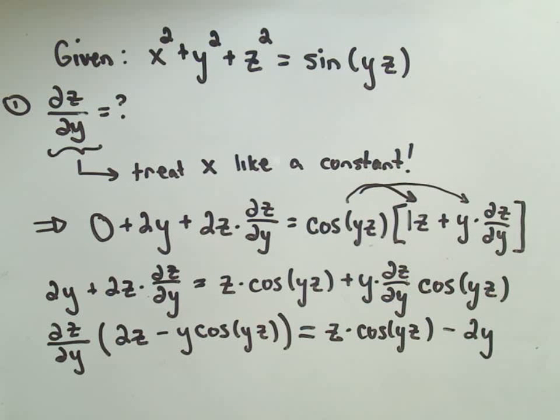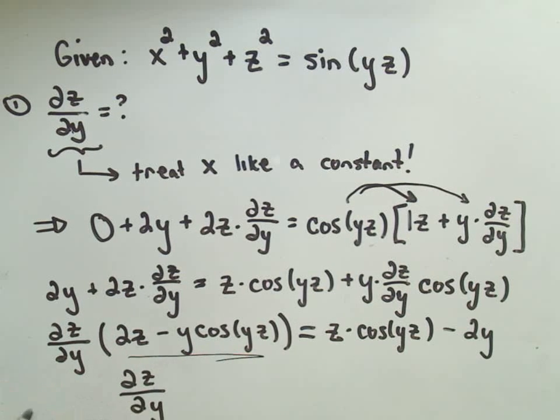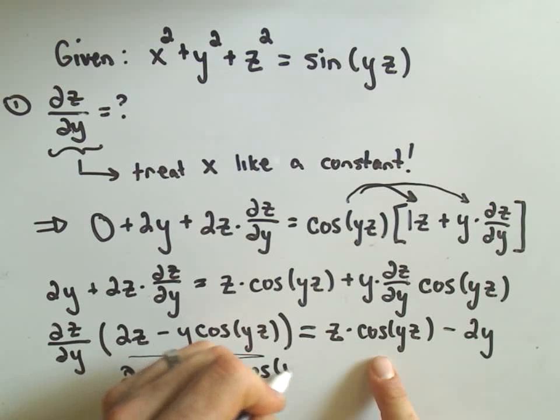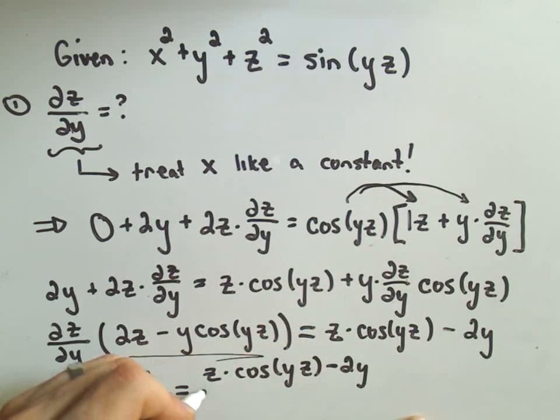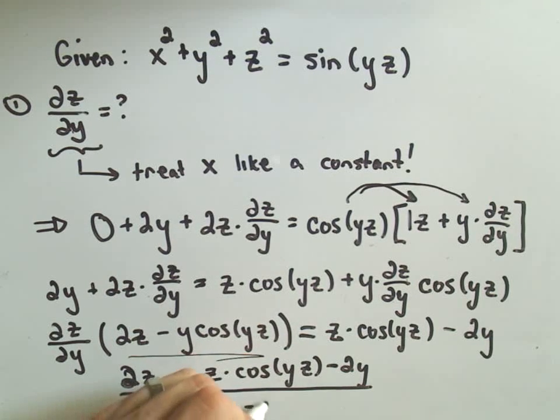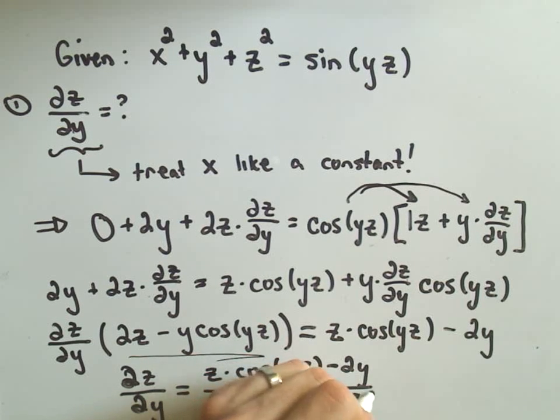And last but not least, all you have to do is simply divide through by all this stuff. So the partial of z with respect to y, my partials look like 2s, so those definitely aren't 2s, those are partial derivatives. So the partial of z with respect to y would be z times cosine of yz minus 2y all divided by 2z minus y times cosine of yz.